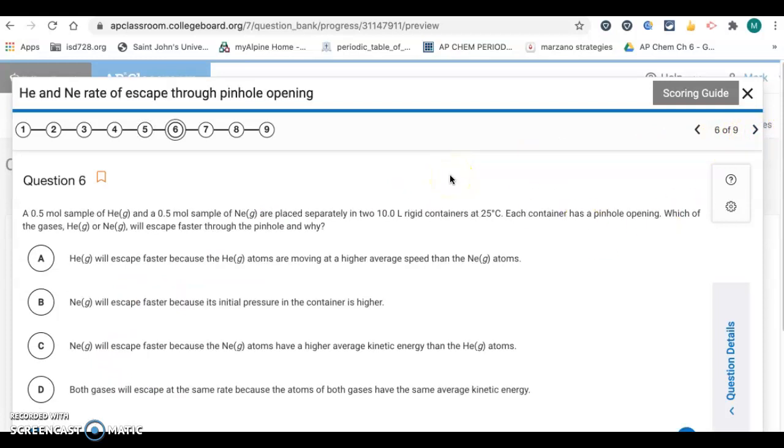Question 6. A 0.5 mole sample of helium and a 0.5 mole sample of neon are placed in two 10 liter rigid containers at 25 degrees Celsius. Each container has a pinhole opening. Which of the gases, helium or neon, will escape faster through the pinhole and why? This concept is effusion. Lighter gases will effuse faster than heavier gases because they're smaller and they tend to move faster. So it's easier for them to get through the little pinhole opening. So helium is going to be, it will escape faster. So that's letter A is the only choice where it has helium. Helium will escape fast because the helium atoms are moving at a higher average speed than the neon atoms. They have the same kinetic energy, but helium is lighter, so they have to move faster.